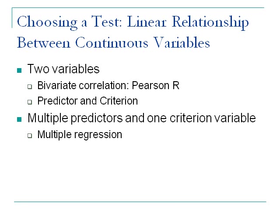Multiple regression is similar mathematically and conceptually to MANOVA, the difference being that rather than predicting discrete group status (A or B), you're predicting a continuous criterion variable. Use this when you're interested in the linear combination of predictor variables and want to know which one is most important. If you don't have a good idea of which is most important, you do stepwise multiple regression — enter all variables at once and let the statistical software determine which accounts for the most variance, then the next, and so forth.